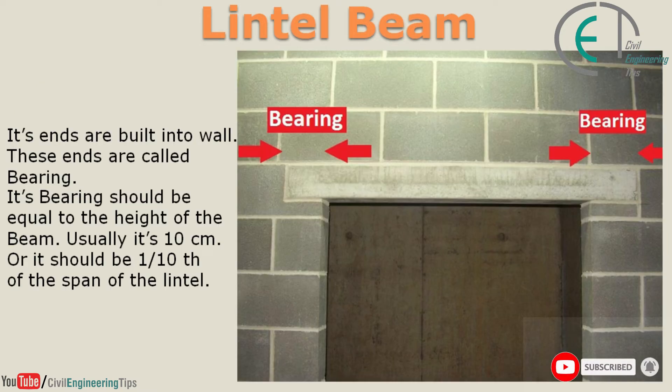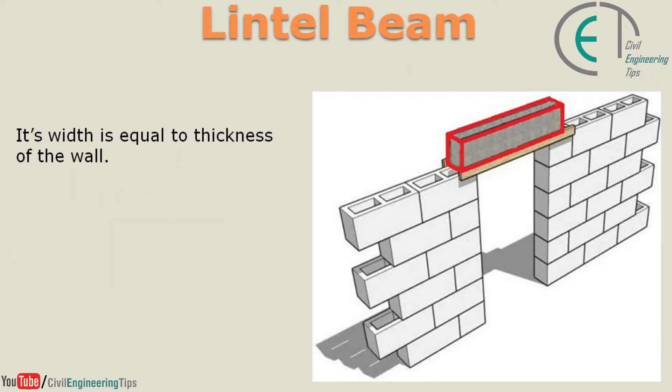These ends are called bearings. The bearing should be equal to the height of the beam — usually 10 centimeters, or it should be one tenth of the span of the lintel. Its width is equal to the thickness of the wall.